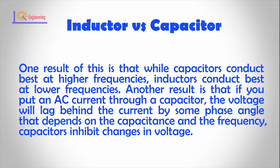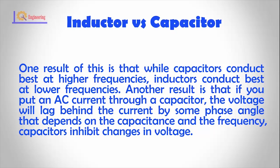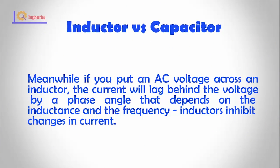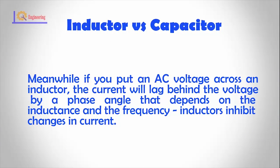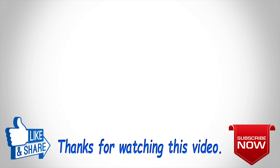If you put an AC current through a capacitor, the voltage will lag behind the current by some phase angle that depends on the capacitance and the frequency. Capacitors inhibit changes in voltage. Meanwhile, if you put an AC voltage across an inductor, the current will lag behind the voltage by a phase angle that depends on the inductance and the frequency. Inductors inhibit changes in current.